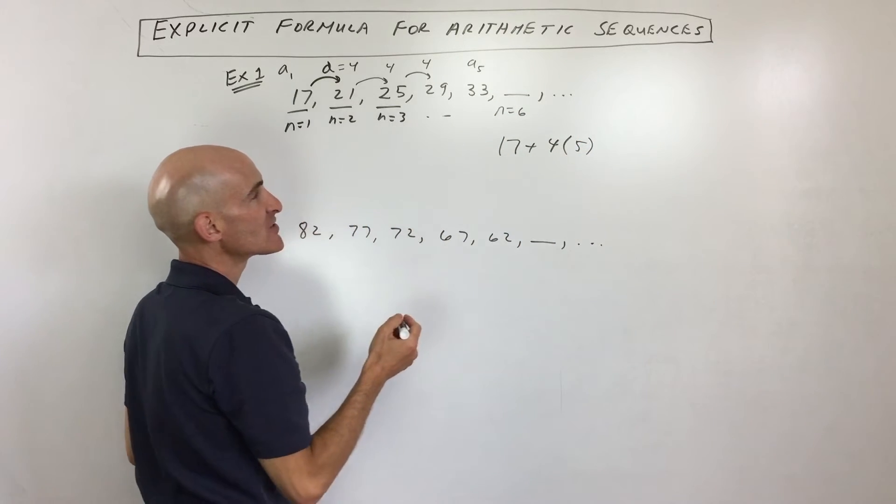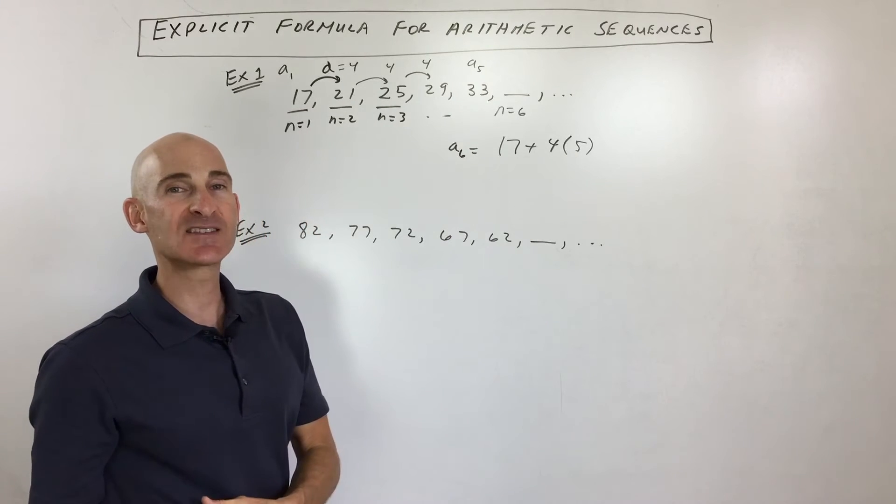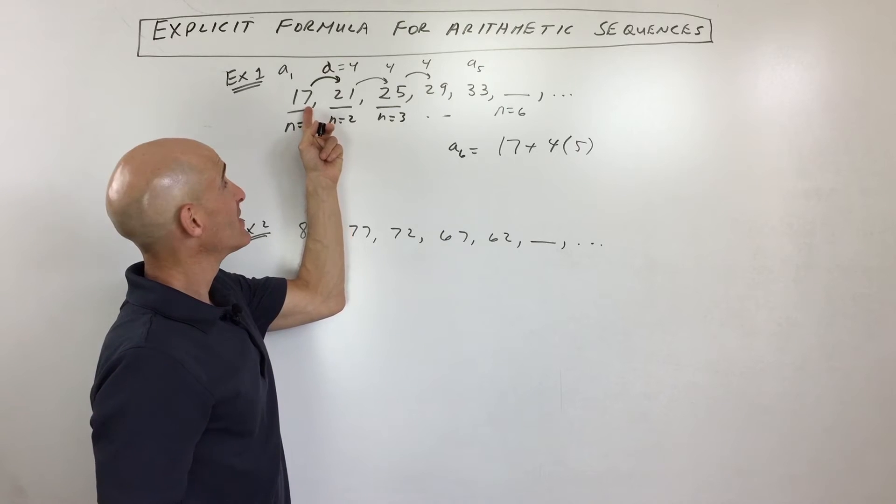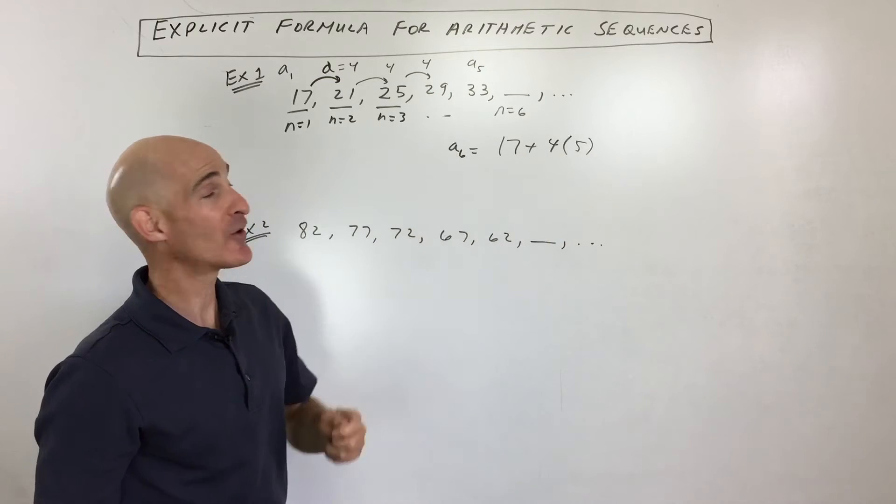And a lot of students, they'll say, hmm, you found the 6th term, but you added 4 five times. How come not 6 times? Well, the thing is, we're already on the first term. So to get to the 6th term, we only have to add 4 one less time.